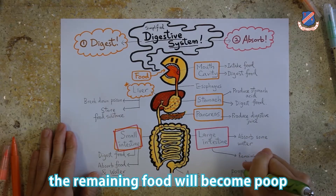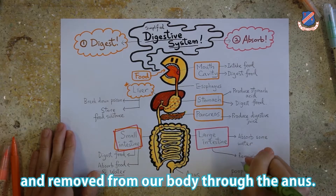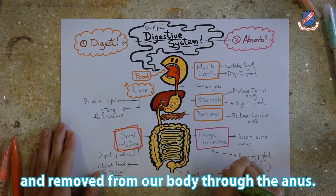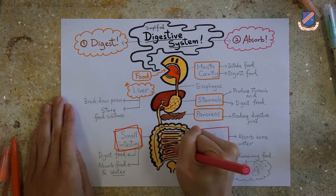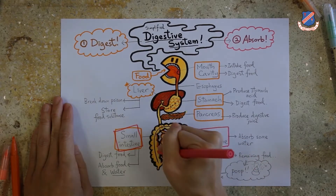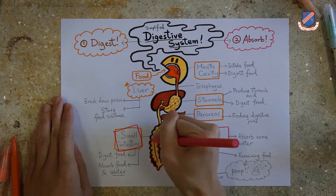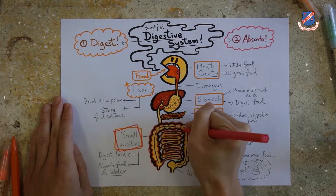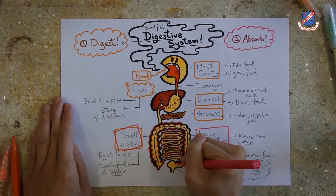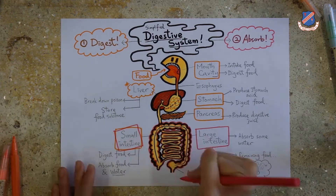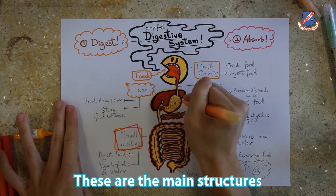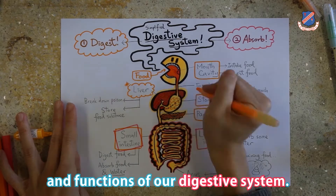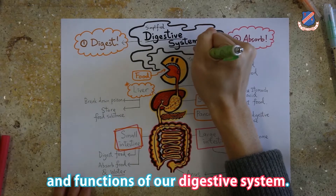Finally, the remaining food will become poop and be removed from our body through the anus. All these are the main structures and functions of our digestive system.